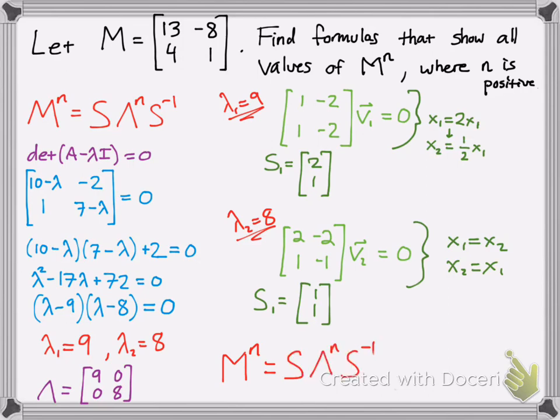So this is what we're going for, right? We have our S now - it's just combining the two special solutions into one matrix. And we have our diagonalization matrix, and that's going to be raised to the nth power.